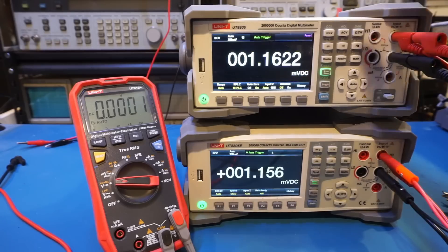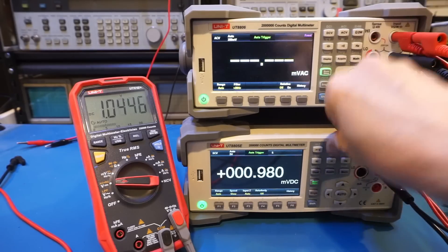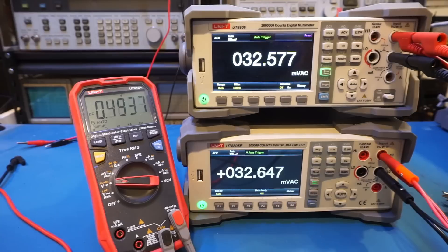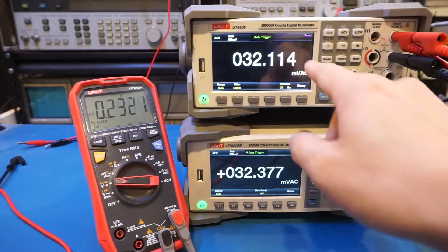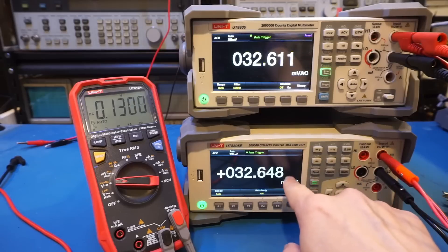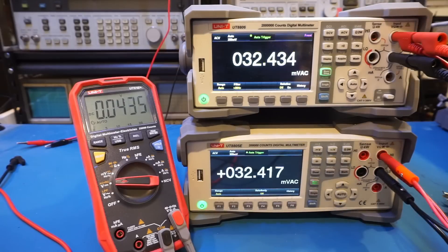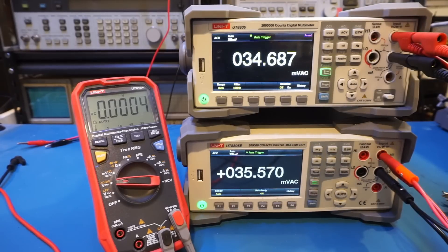And I'll give you an example. Let's switch them to AC measurement range. For instance, in AC range, the resolution of both of the 8805E and 8806E are at 1uV. You can see the last digit is 1uV, although the 8806E has one extra digit.